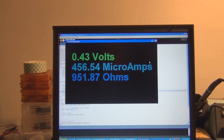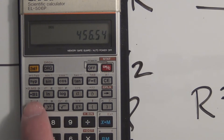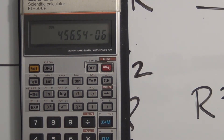We can see the current values here. We have 0.43 volts at the intersection of the known and the unknown resistor, and we have 456.54 microamps. So if we calculate the voltage divided by that current, it should come out to 951.87 ohms. Calculating: 0.43 volts divided by 456.54 times 10 to the minus 6 equals 941.86 ohms. So it's not the most accurate ohmmeter.